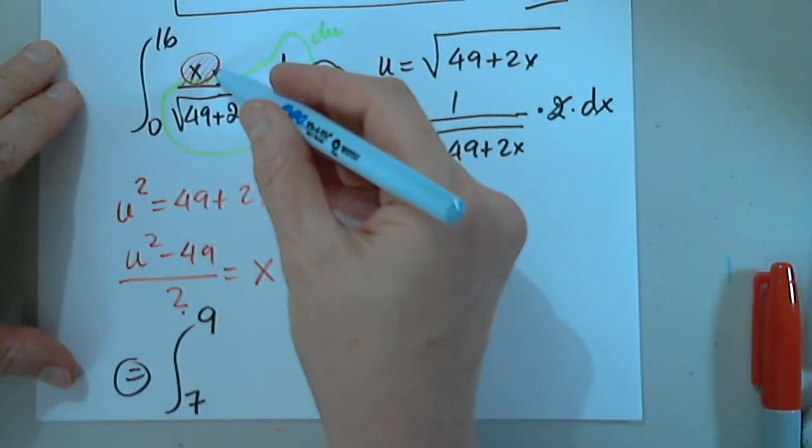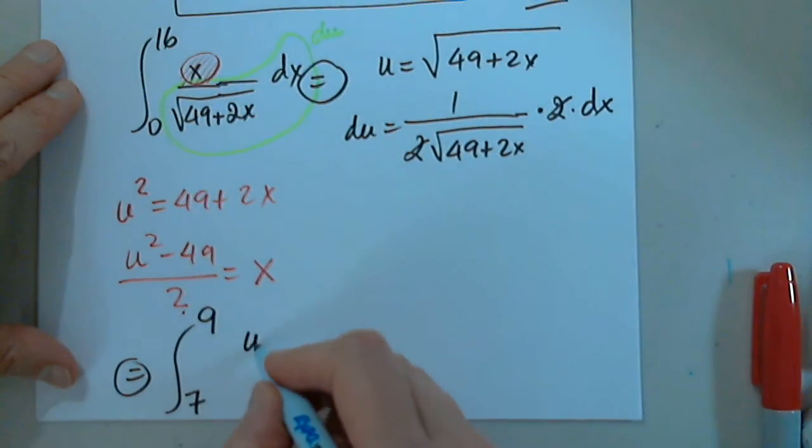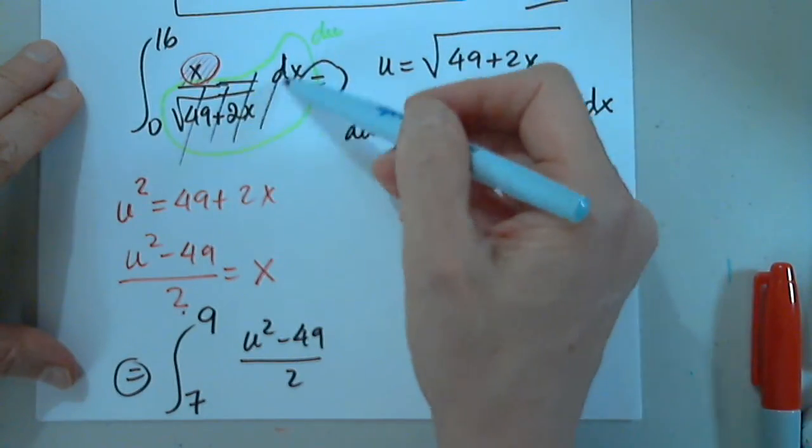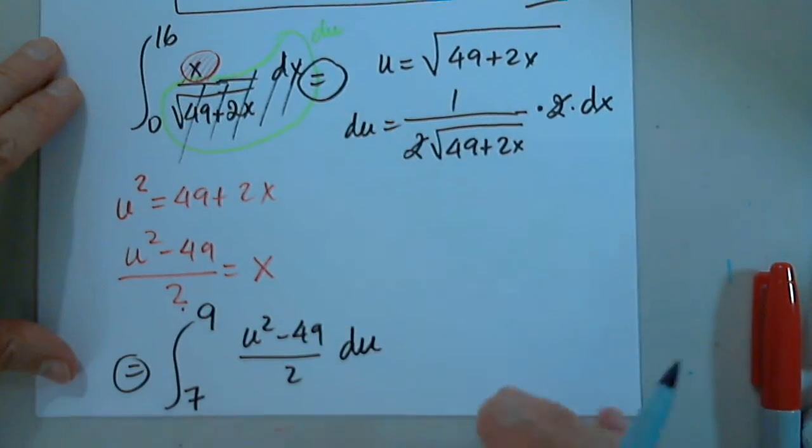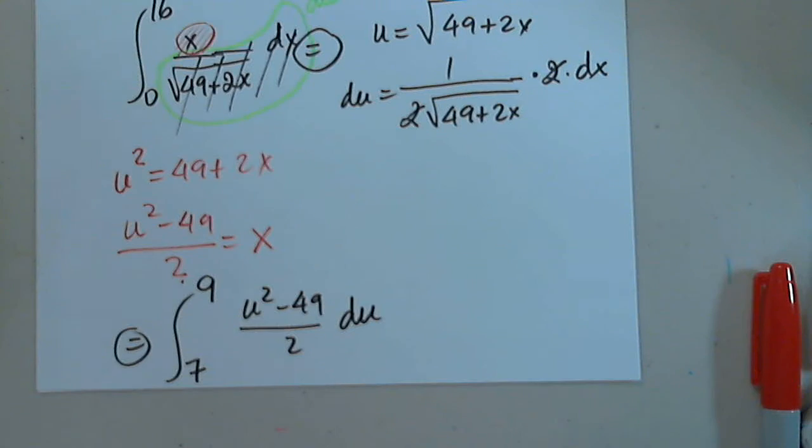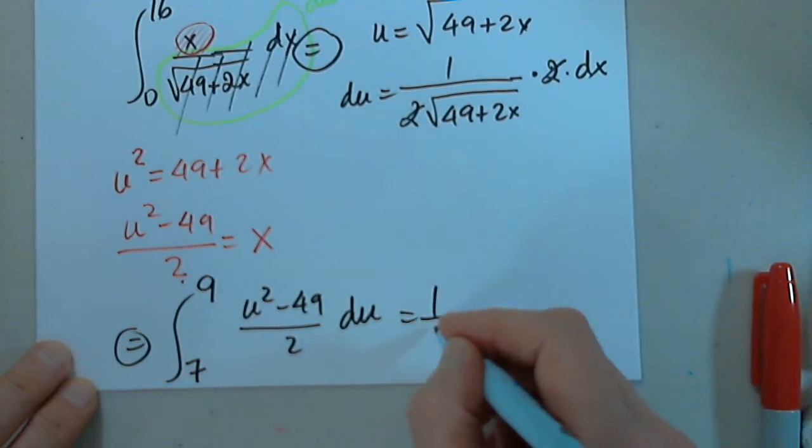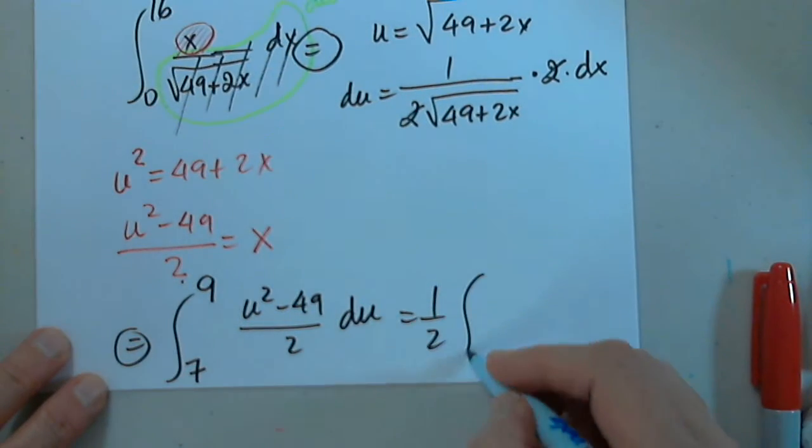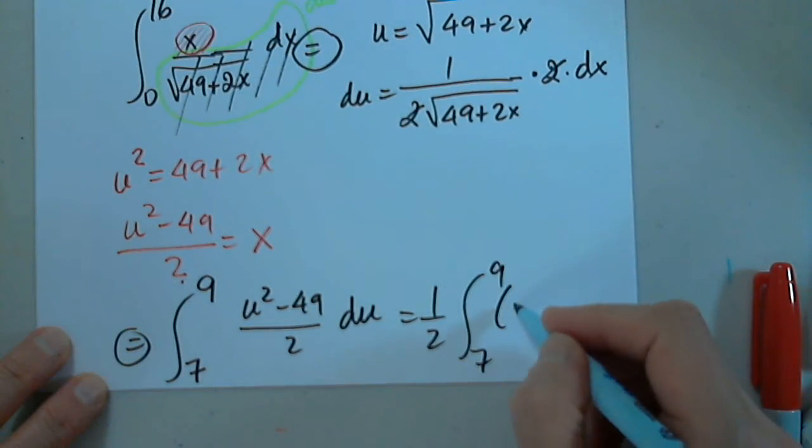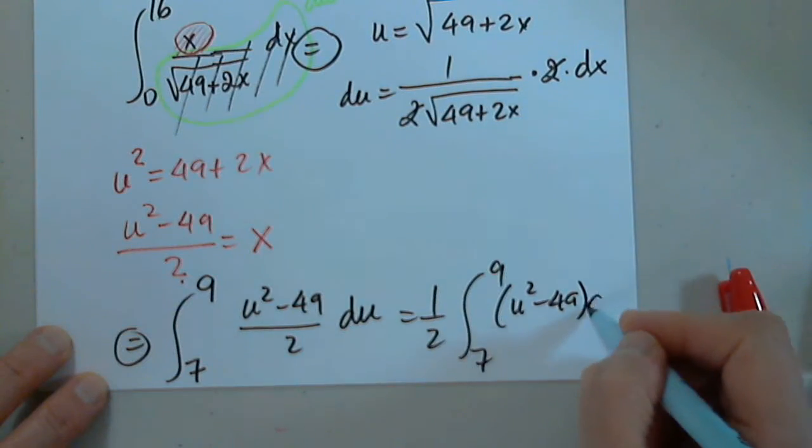This piece is replaced by u squared minus 49 over 2, and all this goes away and is replaced by du. I'm happy with what I have. I just have to move one half in front. Always try to make it as easy as possible. u squared minus 49 du.